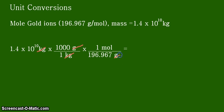Alright, so we are only left with the unit moles. And all we have to do now is to do the calculation for us to solve the problem. And the answer is 7.2 times 10 raised to the power of positive 10 moles of your gold ions.